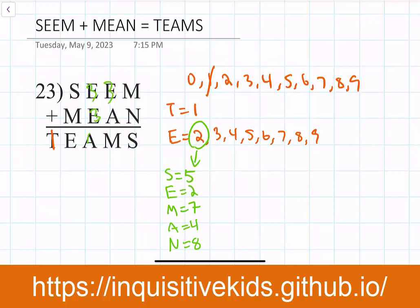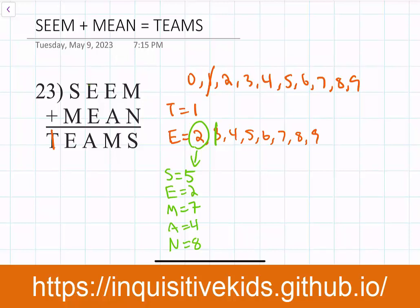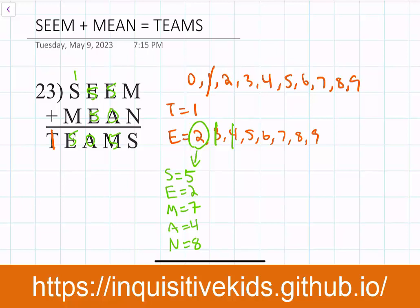Now what if e equals 3? a would equal 6 and m would be 9. s equals 4, n would be 5, and we would have to carry a 1. But then the tens place wouldn't work out. What if e equals 3 and a equals 7? m would be 0, but m can't be 0 because m is the leftmost digit of MEAN. So this possibility wouldn't work out. What if e equals 4? a would equal 8, but we're not carrying anything, and when you look at the tens place, we would have to carry something — this is controversial. What if e equals 4 and a equals 9? m would be 3, and s would also have to be 9, but s and a can't both be 9. What if e equals 5? a would be 0 and m would also have to be 5, but m and e can't both be 5.